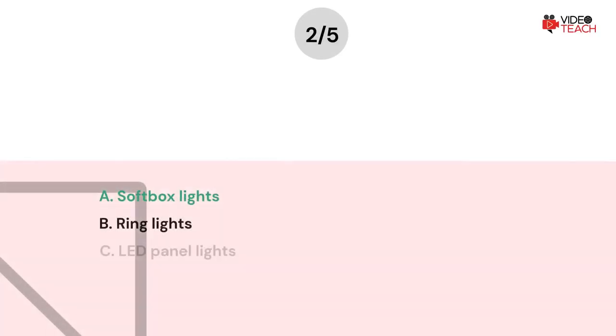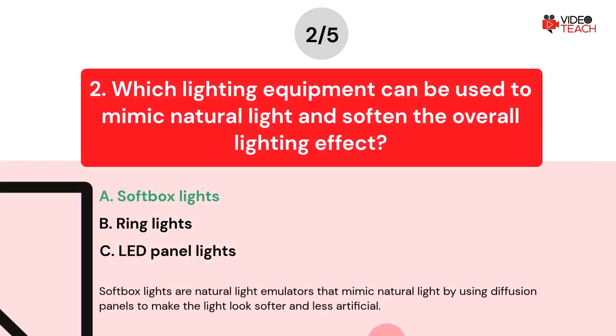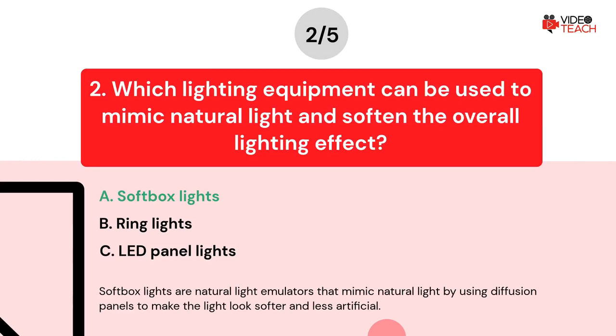The correct answer is Option A. Softbox lights are natural light emulators that mimic natural light by using diffusion panels to make the light look softer and less artificial.